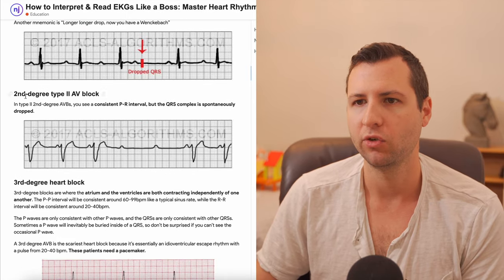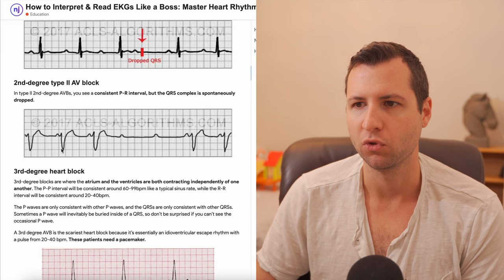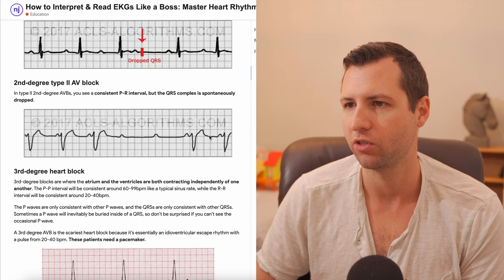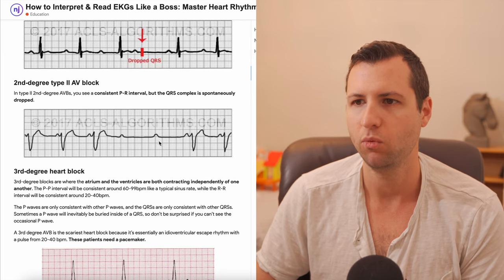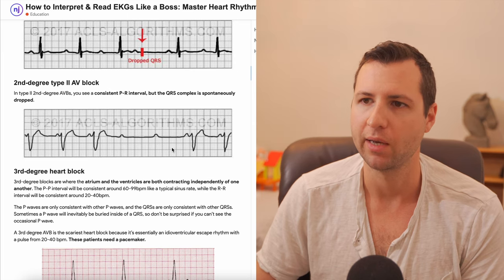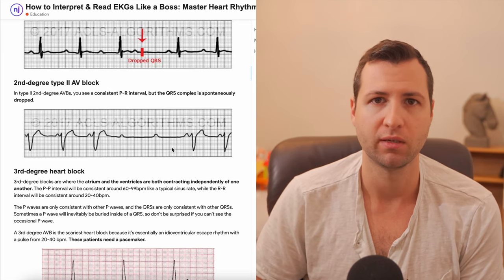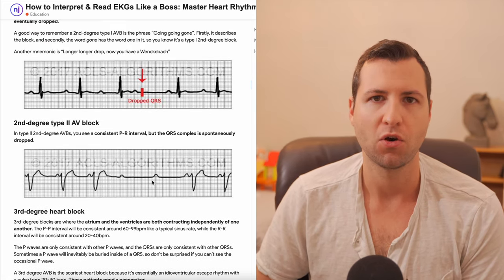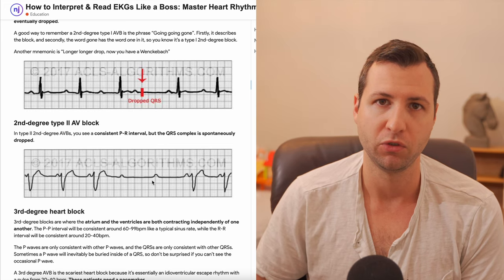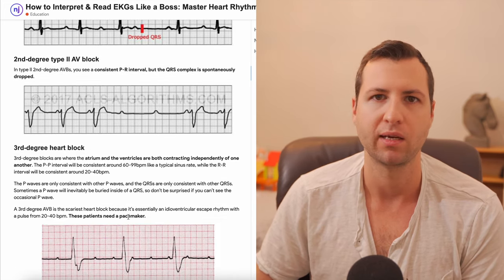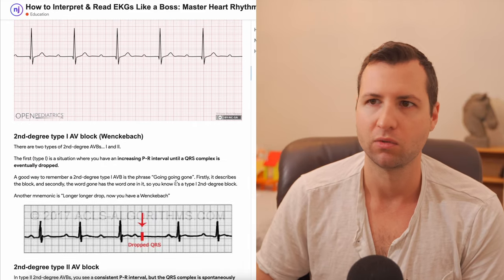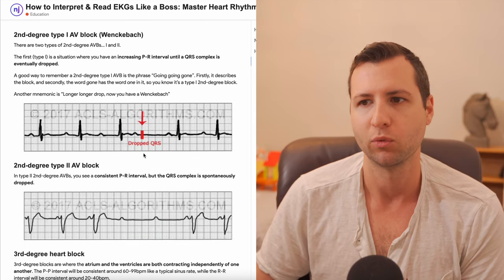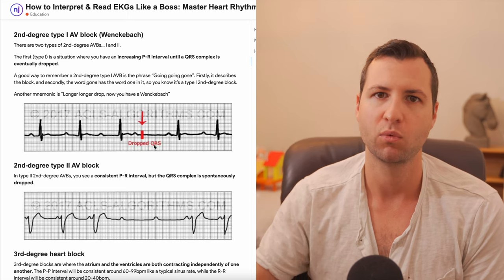A second degree type two is going to have very consistent PR intervals, but QRS complexes are just dropped sometimes. You can see these PR intervals are all pretty much the same throughout the strip, but we sometimes have P waves without QRS complexes — that's a second degree type two. Second degree heart blocks are more severe than first degree because we're dropping QRS complexes, which are essentially missed beats of perfusion to the body. That's more problematic than just having a slightly bradycardic rhythm with a long PR interval — here the rhythm is irregular and we're actually missing beats that send blood out to the system.